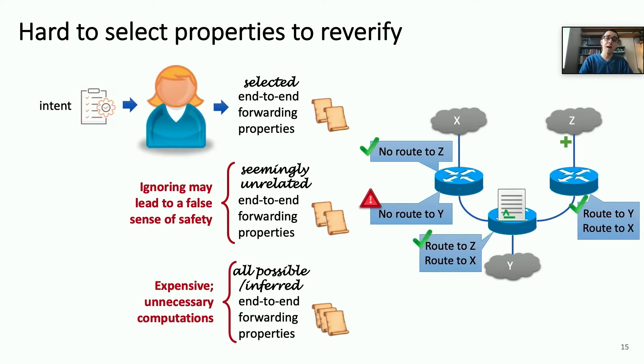A simple workaround would be to actually check all possible or perhaps all inferred end-to-end forwarding properties. For example, we could check all pairs reachability, and that would capture this change in this seemingly unrelated behavior. But doing this from scratch is prohibitively expensive and actually likely results in a lot of unnecessary computation. For example, if access from a subnet was already restricted, then further restrictions in access are unlikely to impact reachability from that subnet. And so therefore, we don't want to have to re-verify every single property.